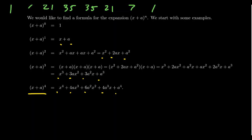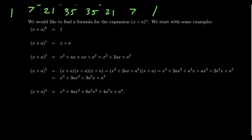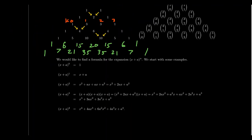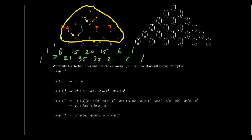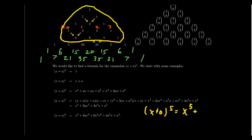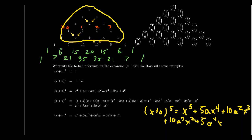Looking at all the coefficient rows: 1; 1,1; 1,2,1; 1,3,3,1; 1,4,6,4,1. These look very familiar — they exactly match the rows of Pascal's triangle. If you're feeling bold, try expanding (x+a)^5 and verify that the result is x^5 + 5ax^4 + 10a^2x^3 + 10a^3x^2 + 5a^4x + a^5. The coefficients are the fifth row of Pascal's triangle. These are the binomial coefficients.